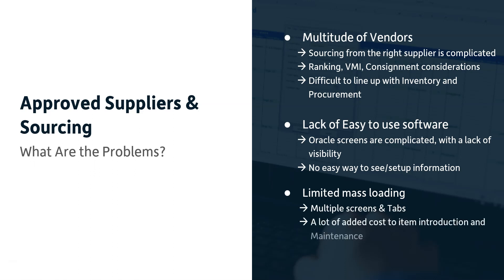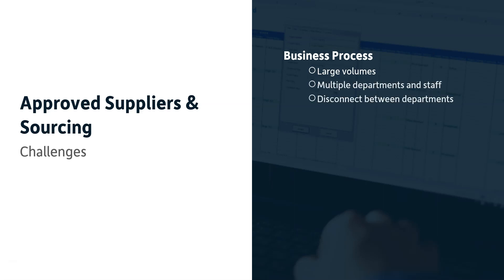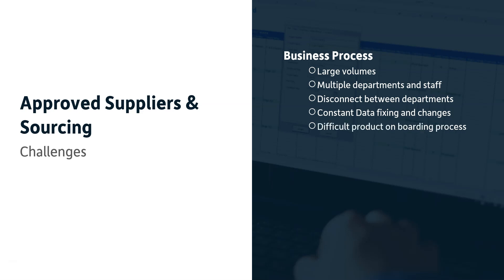There are limited mass loading capabilities, multiple screens and tabs, and high cost for item introduction and maintenance. Business processes defining the challenges include large volumes, multiple departments, and disconnects between procurement, engineering, shop floor, manufacturing, and the product definition group. There is constant data fixing and a difficult product onboarding process because it involves so many different groups.